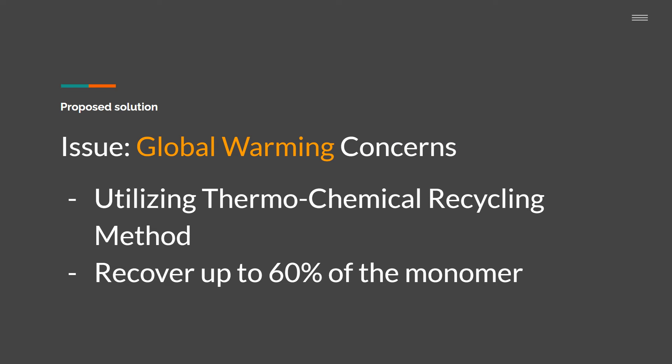The next issue is about global warming concerns that the polypropylene plant produces. Instead of incinerating — burning the plastic — we can alternatively utilize the thermochemical recycling method, which is far more eco-friendly and helps us reduce our raw material costs as it is able to recover up to 60% of the monomer. This is one of the solutions we can utilize to reduce and lower the global warming level that these plants produce.